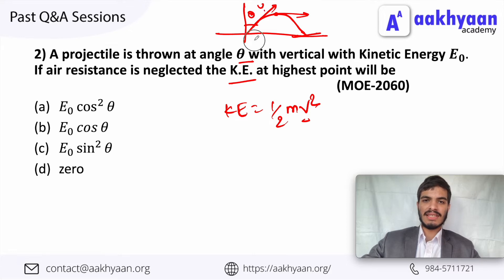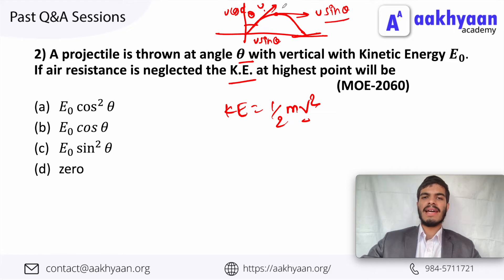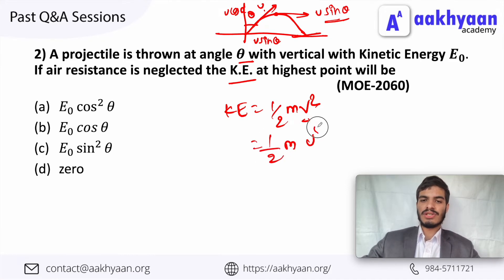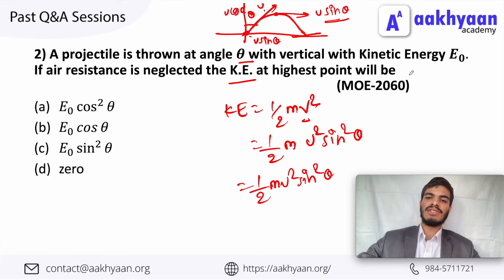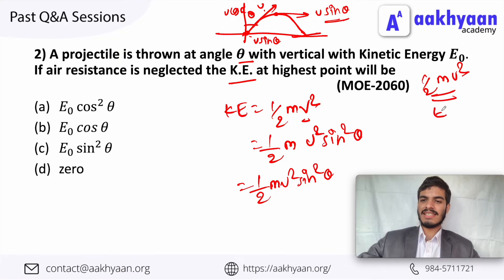The vertical component of velocity is u cos theta and the horizontal component is u sin theta. At the top point the vertical component becomes zero, so the total velocity is u sin theta. The kinetic energy at the top is 1/2 m u squared sin squared theta.